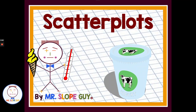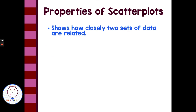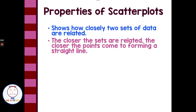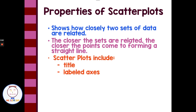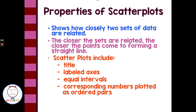Scatterplots. Properties of scatterplots. A scatterplot shows how closely two sets of data are related. The closer the sets are related, the closer the points come to forming a straight line. A scatterplot should include a title, labeled axes at equal intervals, and corresponding numbers are plotted as ordered pairs.